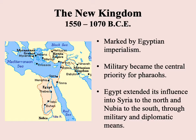The New Kingdom runs between 1550 and 1070 BCE. Its chief characteristic is that during this period Egypt is very active imperialistically — meaning empire building. Related to that, the military becomes the central priority for pharaohs. During this period, Egypt is going to extend its influence both north and south: into Syria to the north and Nubia to the south. In some cases by directly occupying territory, in other cases through diplomatic means — but imperialism is the defining characteristic of the New Kingdom.